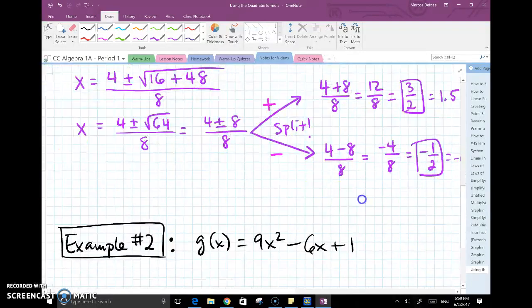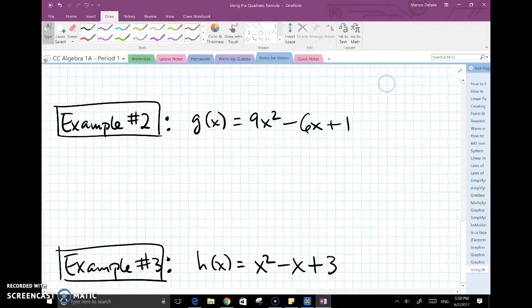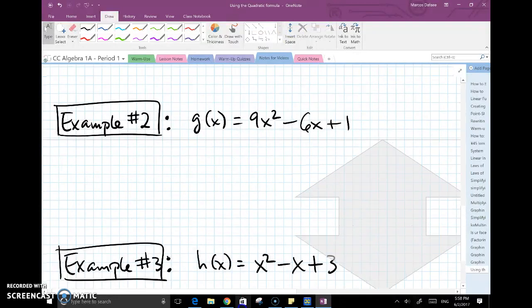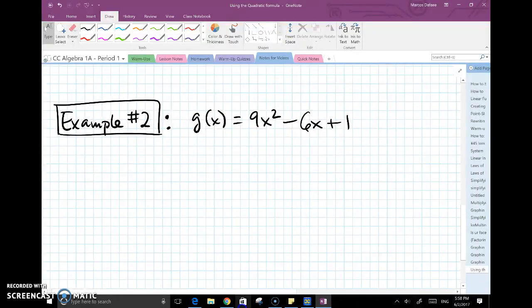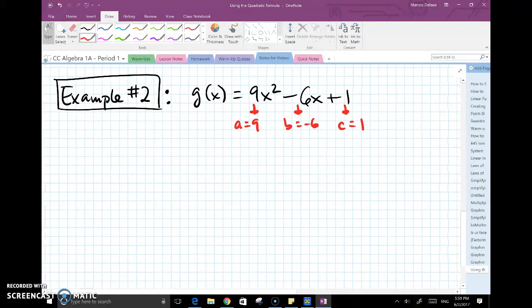In the next example, we have to once again identify our a, b, and c. So a is 9, b is negative 6, c is 1. And you go ahead and jump right into the quadratic formula.